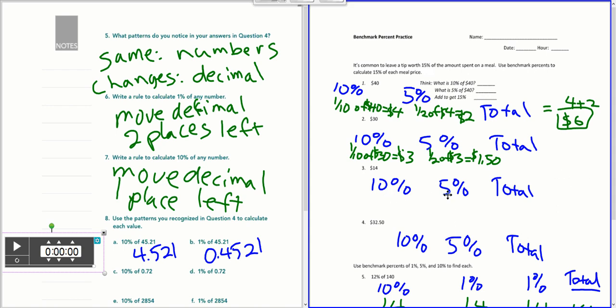Same thing here. Find 10%, 5%, and put those totals together. That would be your 15%. 10%, 5% totals.